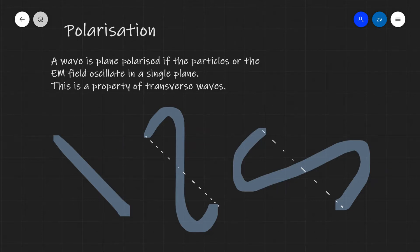Now what does it mean for a wave to be plane polarized? A wave is plane polarized if the particles or the electromagnetic field oscillate in a single plane only.